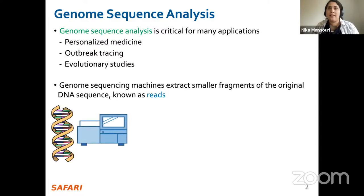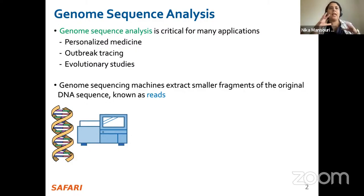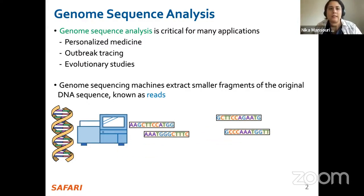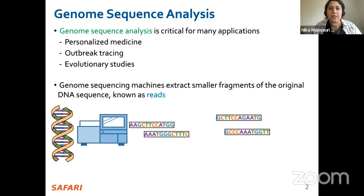Genome sequencing machines extract smaller fragments of the original DNA sequence known as reads. When you have a DNA sequence as your input, these genome sequencing machines read them in small parts because they cannot read them as a whole. These are smaller fragments extracted in terms of DNA alphabet — we call these things reads.